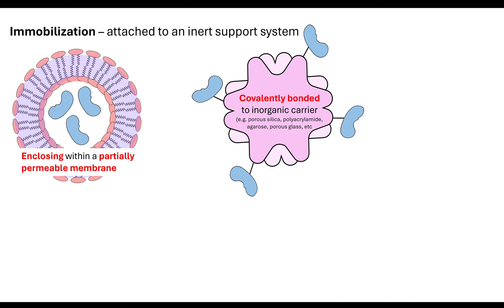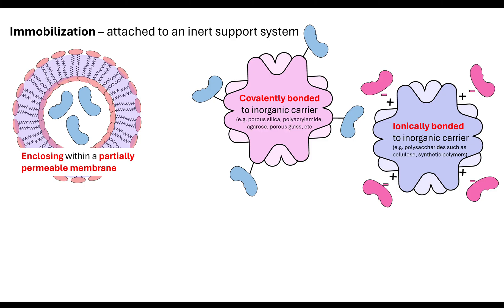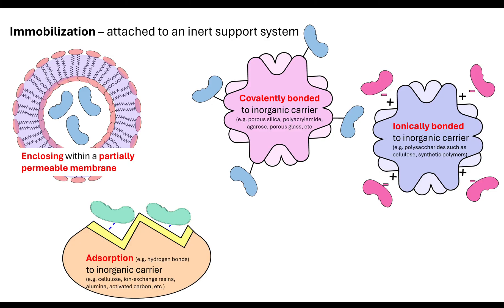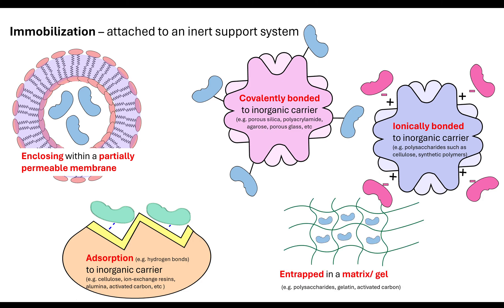We can covalently bond the enzyme to an inorganic carrier — there are lots of different inorganic carriers that can be used. We can also use ionic bonding to immobilize the enzyme to an inorganic carrier. When enzymes are bonded to these carriers, they are stabilized, so their tertiary structure changing is controlled because they have formed extra bonds. This makes them a little bit more stable with respect to temperature. Another way is adsorption — using, for example, hydrogen bonds — where they adhere to an inorganic carrier.